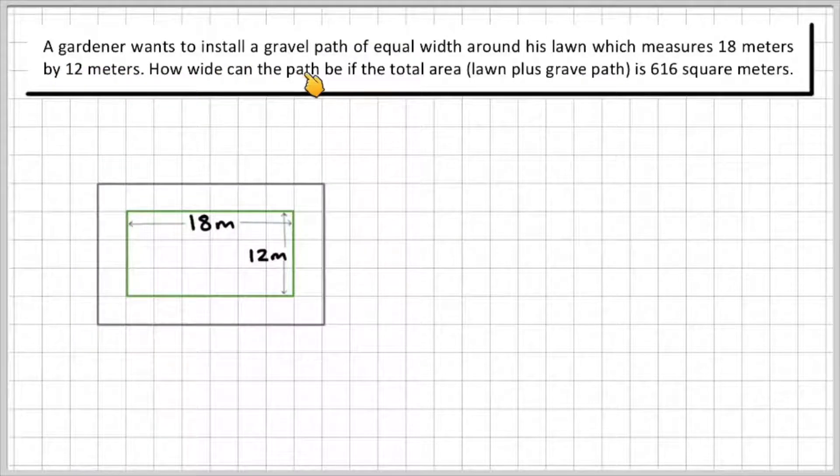So a gardener wants to install a gravel path of equal width around his lawn, which measures 18 metres by 12 metres. How wide can the path be if the total area of the lawn plus the gravel path is 616 square metres.